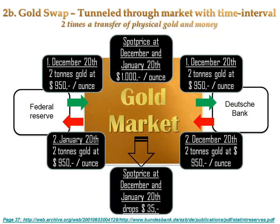Now let's look at a different kind of gold swap — the kind actually mentioned in an official document of the German Bundesbank. Provided the buy and sell orders of the swapping banks are placed at exactly the same time on the market, they cancel each other out. When these orders meet at an artificially low price, a strong price signal to the downside can be given to the market, inducing an instant drop of the spot price of gold.